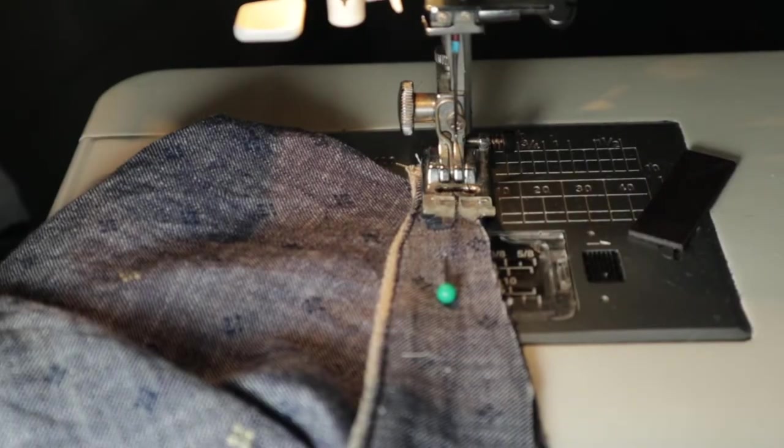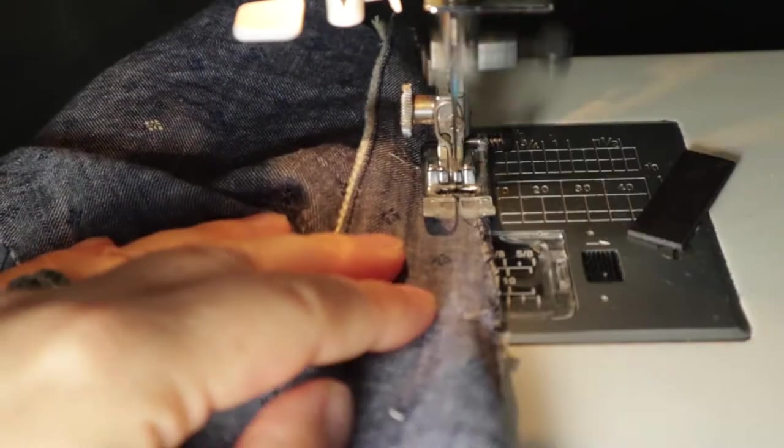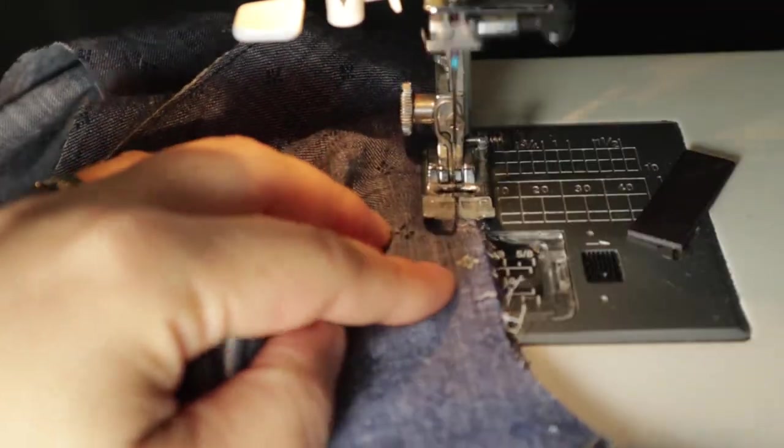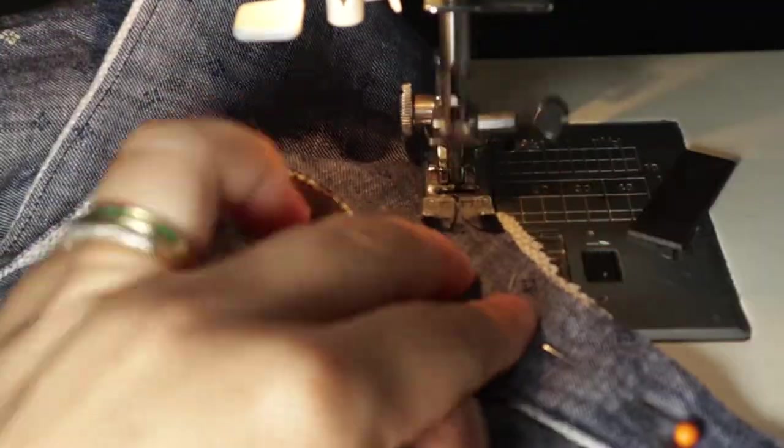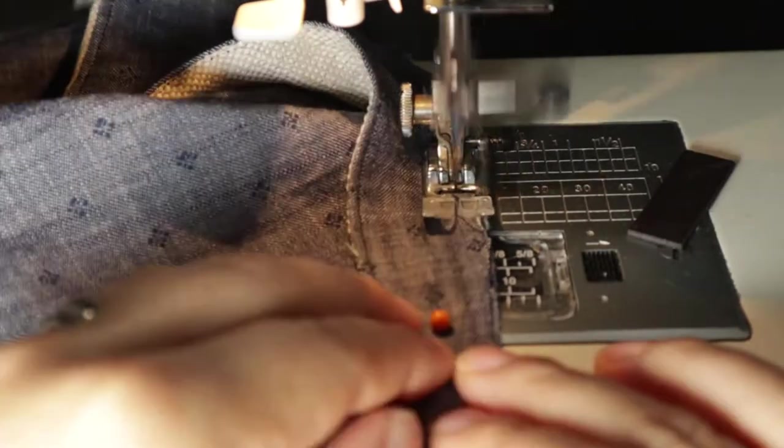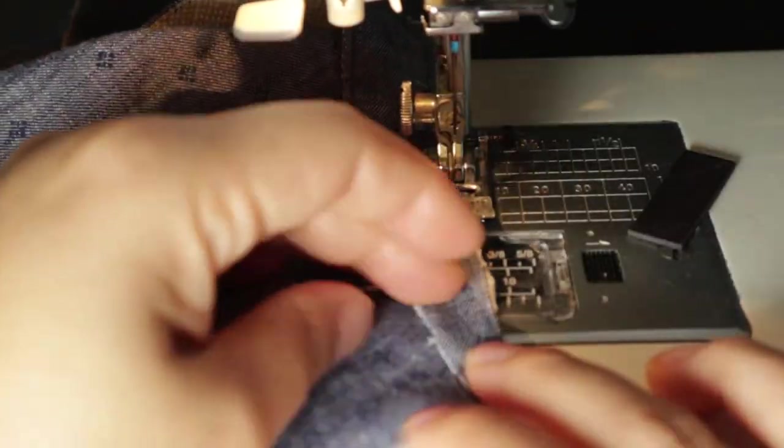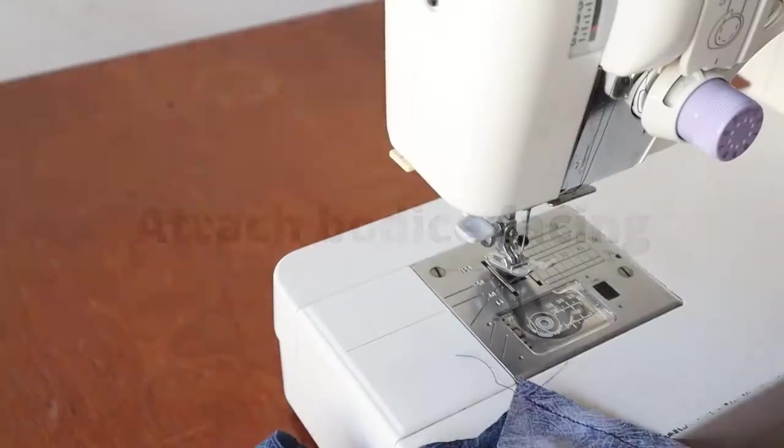Now we're going to baste the collar to the neckline. This is at about a quarter of an inch from the neckline. If you need to, you can do a little bit of clipping. There's a slight clipping to help the collar go around the neckline. You don't have to. So here we're stitching all the way to the end. I think I already top stitched this one, but I didn't top stitch all the way to the end.